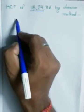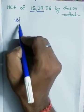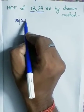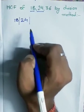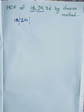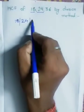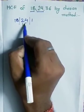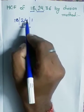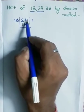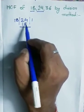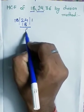I am taking 18 and 24. I am finding HCF by division method. So 18 goes into 24 once, which is 18. 24 minus 18, it becomes 6.